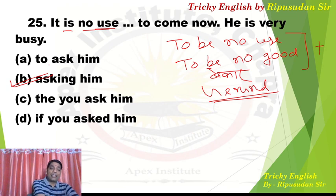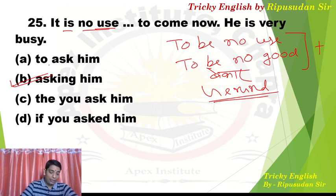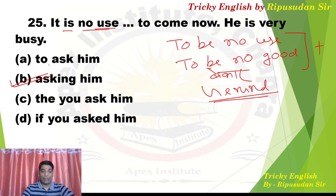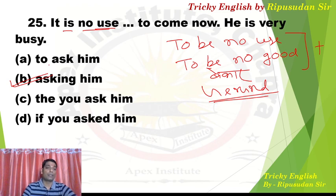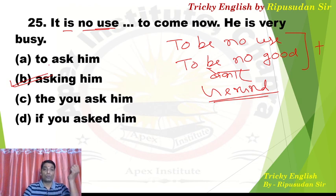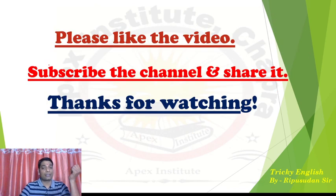So I have explained this set from Objective General English. As you know, class runs live every day, but due to network issues today it could not go live, and when it did, all questions could not be completed. So I'm sending this video to you through this medium. Please revise, note everything down. We will be live every day at 8 o'clock. The app is also available — please download it, I will take tests there and explanations will be on YouTube. With this, today's session is complete.